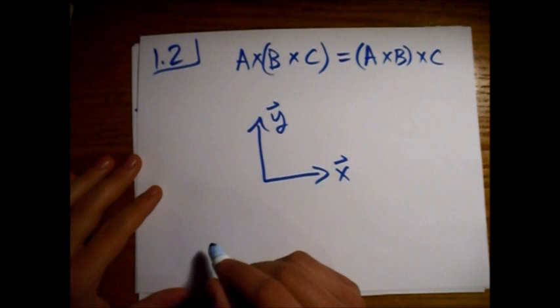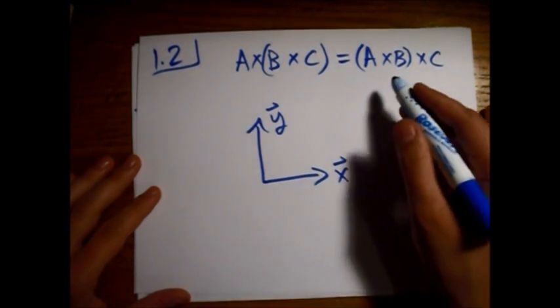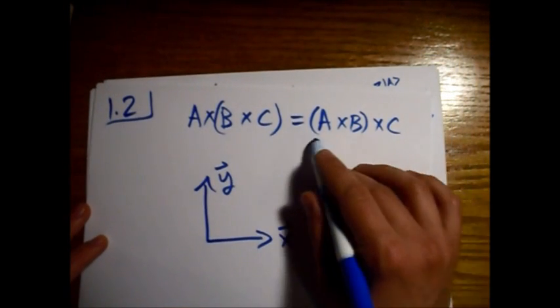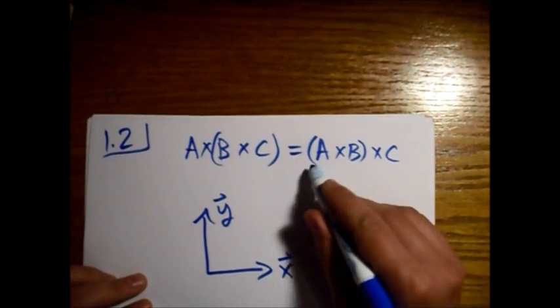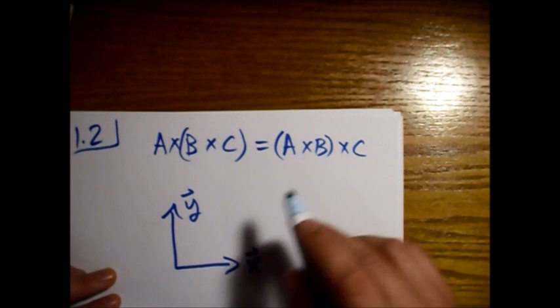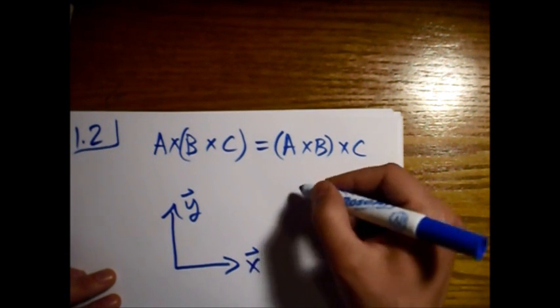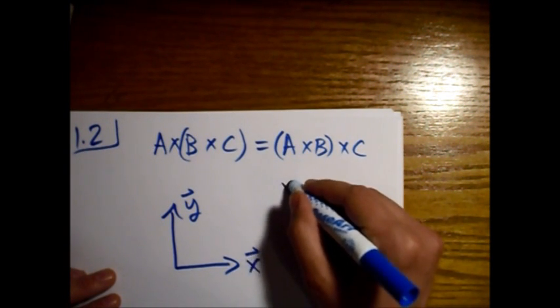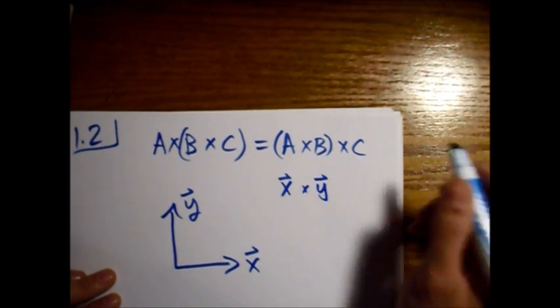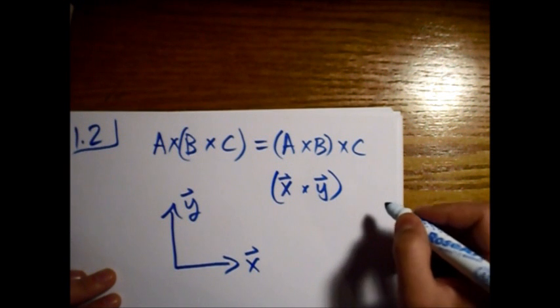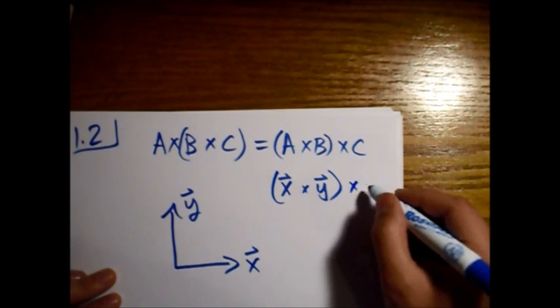So let's look at this side first and do the first cross product before the second one. So if I say x cross y, and then I'm going to cross that with y.